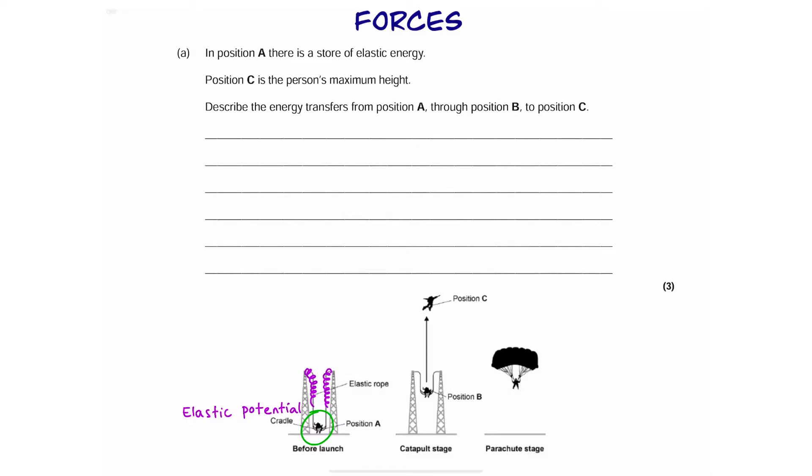Well, we know that the elastic ropes have been stretched. That means they have elastic potential energy. If you were to release them, they would slingshot the person upwards to position B.